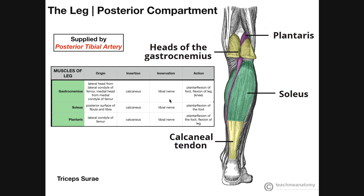All three of these muscles are going to be innervated by the tibial nerve. Recall that the tibial nerve is a branch of the sciatic nerve, which traverses down to the superior angle of the popliteal fossa, where it splits into the tibial nerve and the common peroneal nerve. It's also worth noting that all three of these muscles in the posterior compartment are supplied by the posterior tibial artery, which makes sense since they're in the posterior compartment.